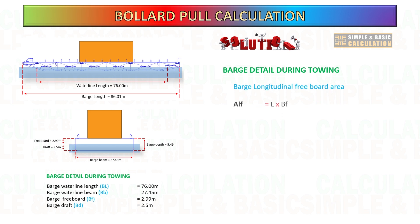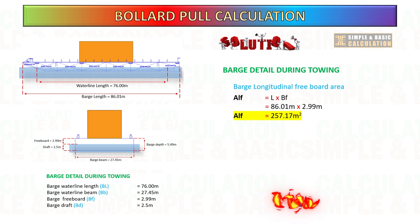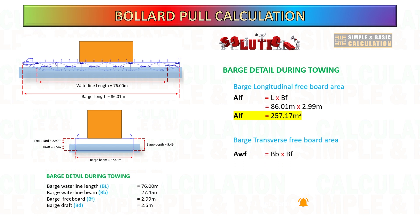Freeboard refers to the vertical distance measured from the waterline to the upper deck level of a ship or boat. This distance helps determine the height of the ship's sides above the waterline when loaded with cargo. Multiply the barge length by the barge freeboard height to get the longitudinal freeboard area, and the same approach applies for the transverse direction.